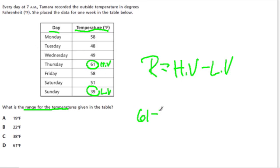So I take 61 minus 39, and what do I get? I get 22 degrees, and there's my answer, B.